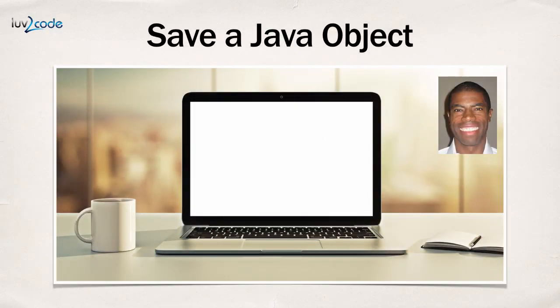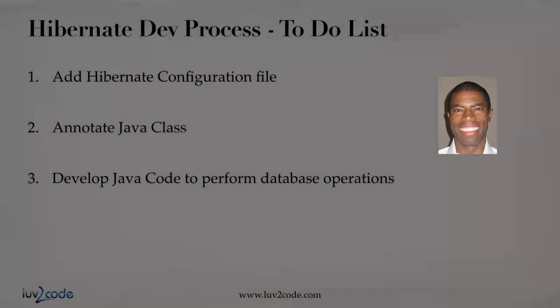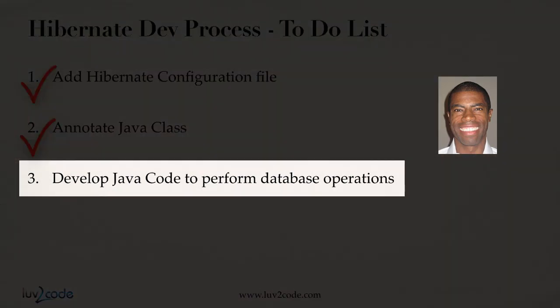In this video, I'm going to show you how to save a Java object with Hibernate. So just a checkpoint on our development process, our to-do list: we've already covered step one, the Hibernate config file. We took care of annotating our Java class. Now at this point, step three, we're actually going to develop Java code to perform database operations.